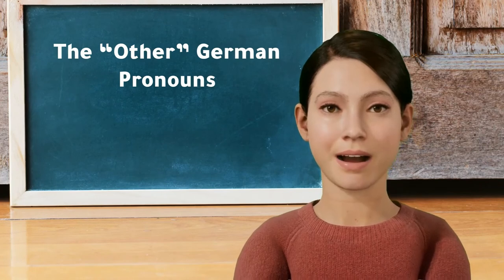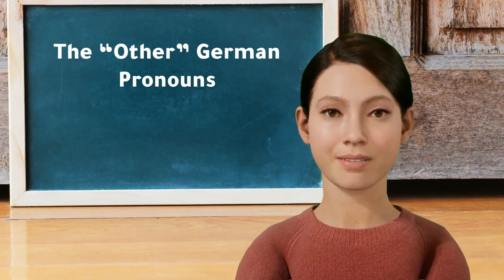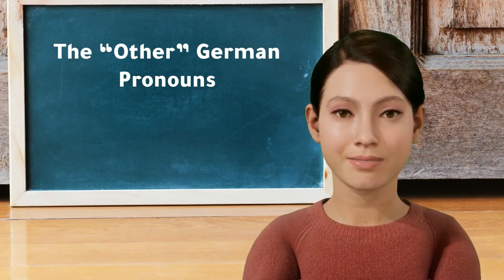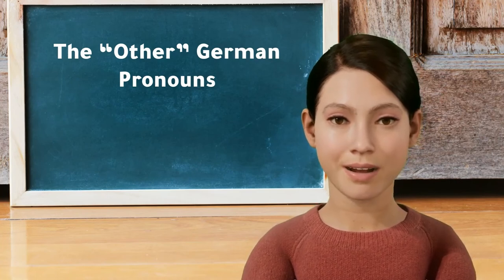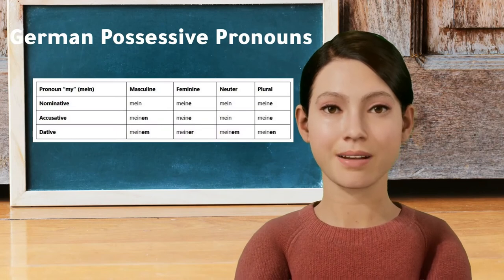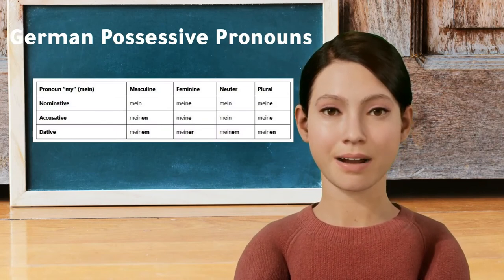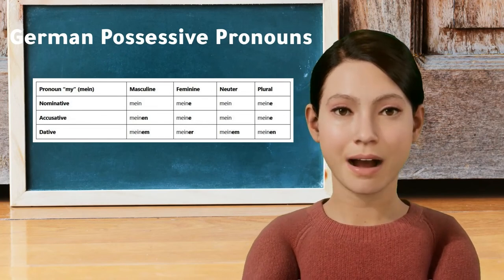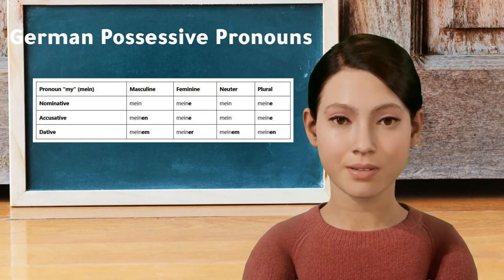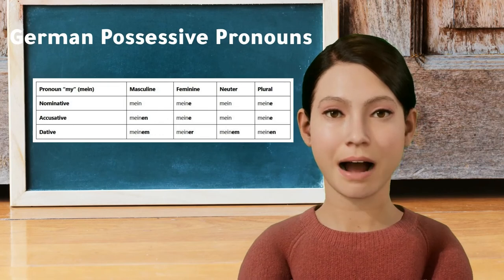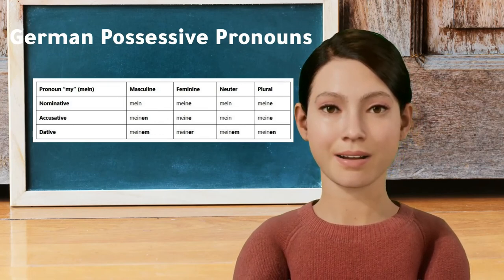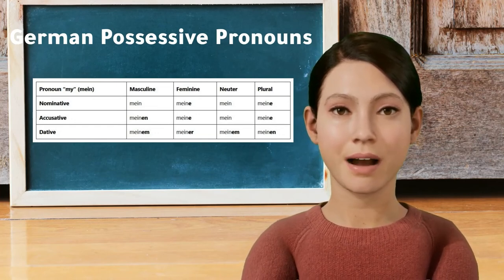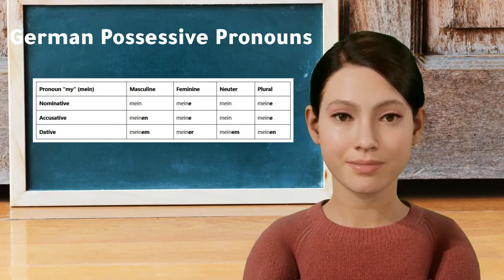The other German pronouns. Besides personal pronouns, German also has possessive, reflexive, indefinite, and demonstrative pronouns. These terms are simply fancy names for everyday words you use all the time. Let's look at possessive pronouns next. German possessive pronouns. You use possessive pronouns to talk about something that belongs to someone else. Sometimes you'll need to attach an ending to your German possessive pronouns, depending on the gender and case of the following noun. Getting the endings correct for German possessive pronouns will require some background knowledge of adjective endings and the German case system. So, let's dive in.